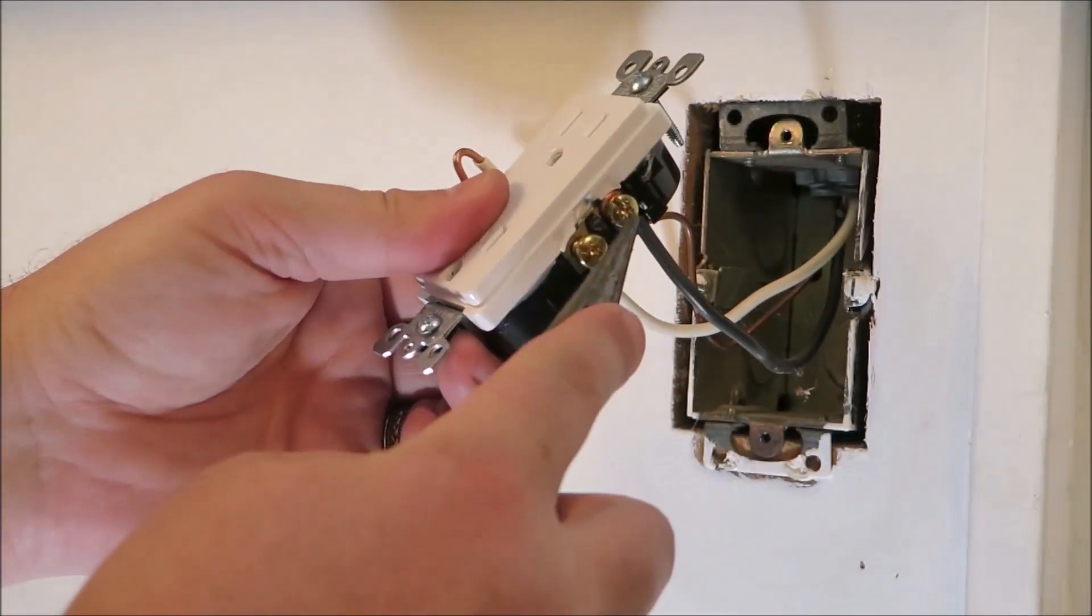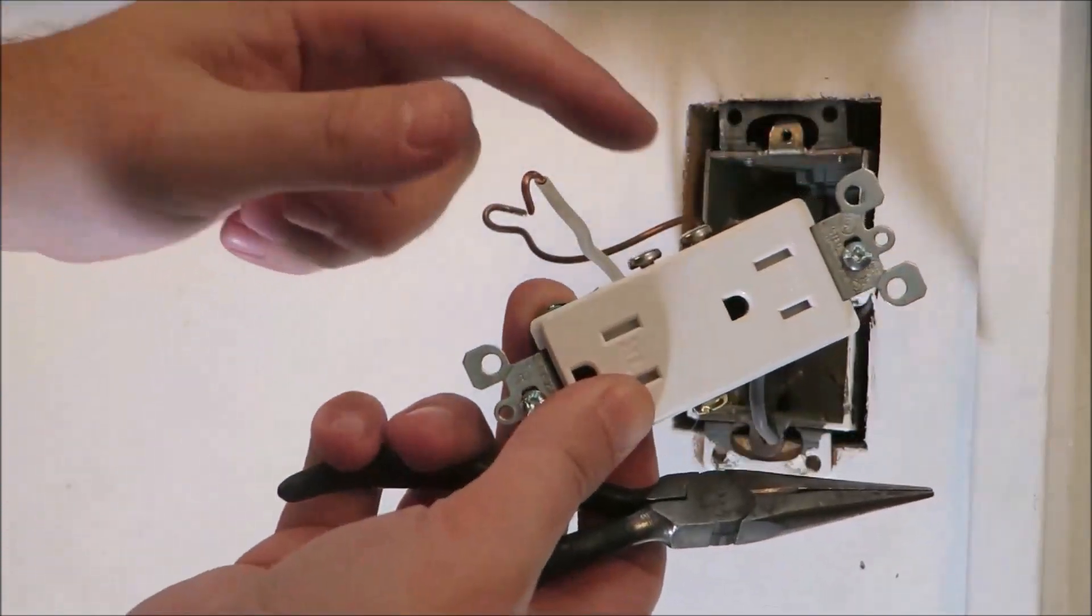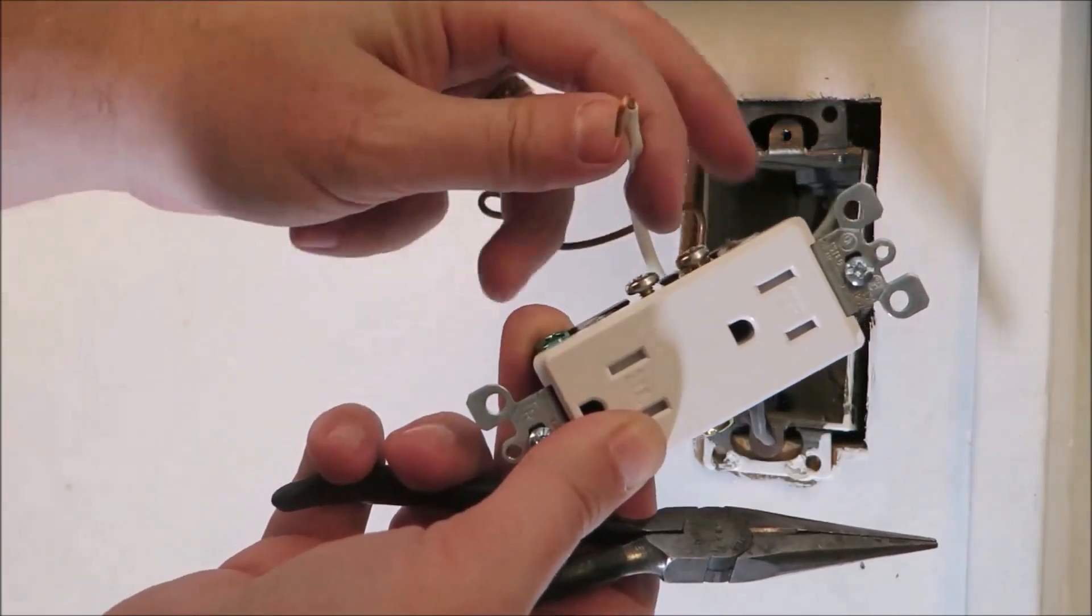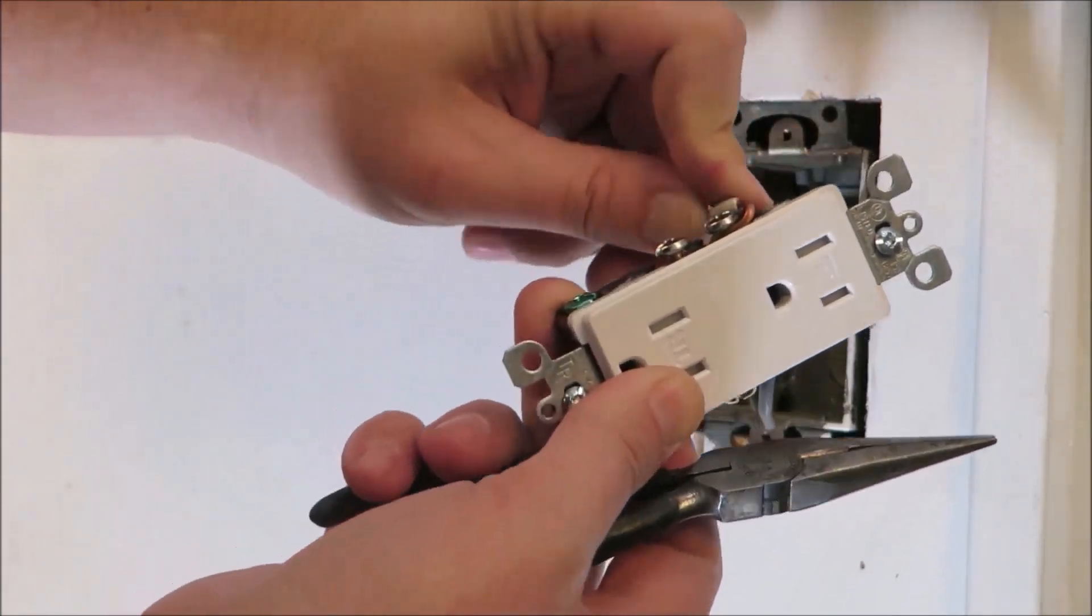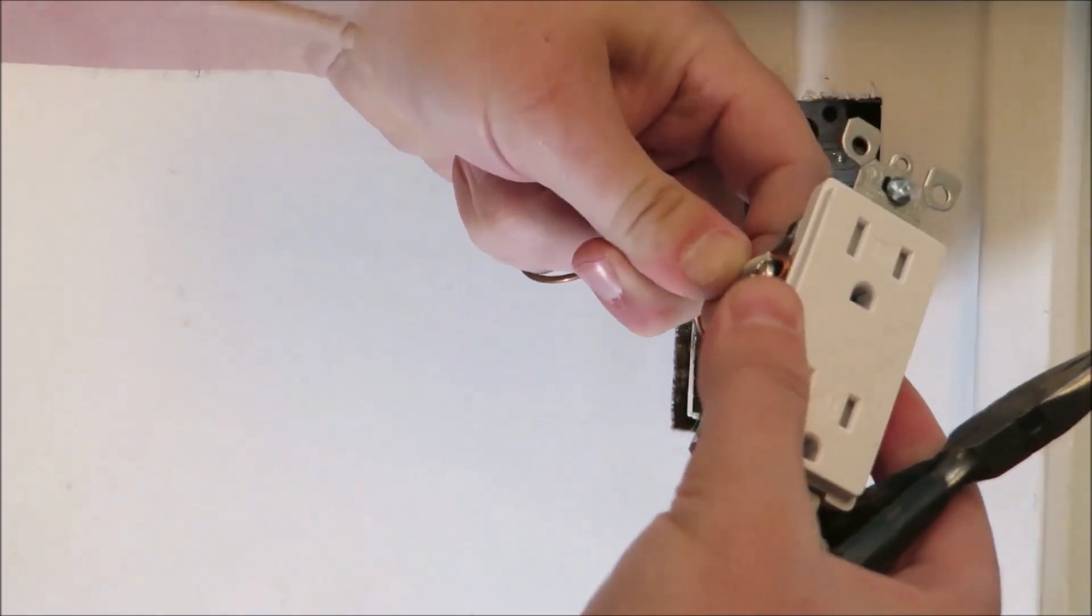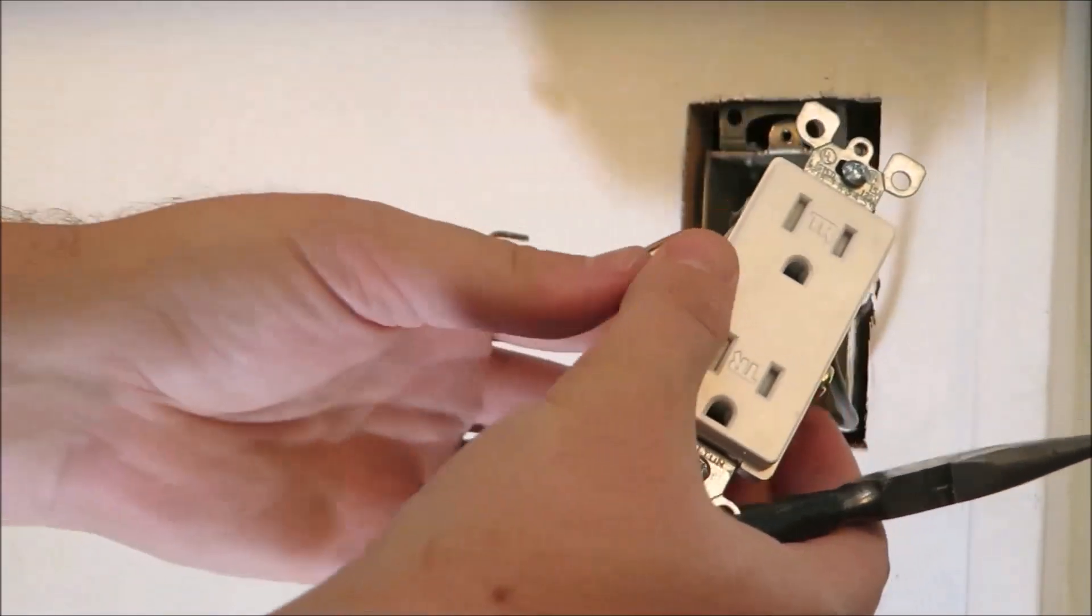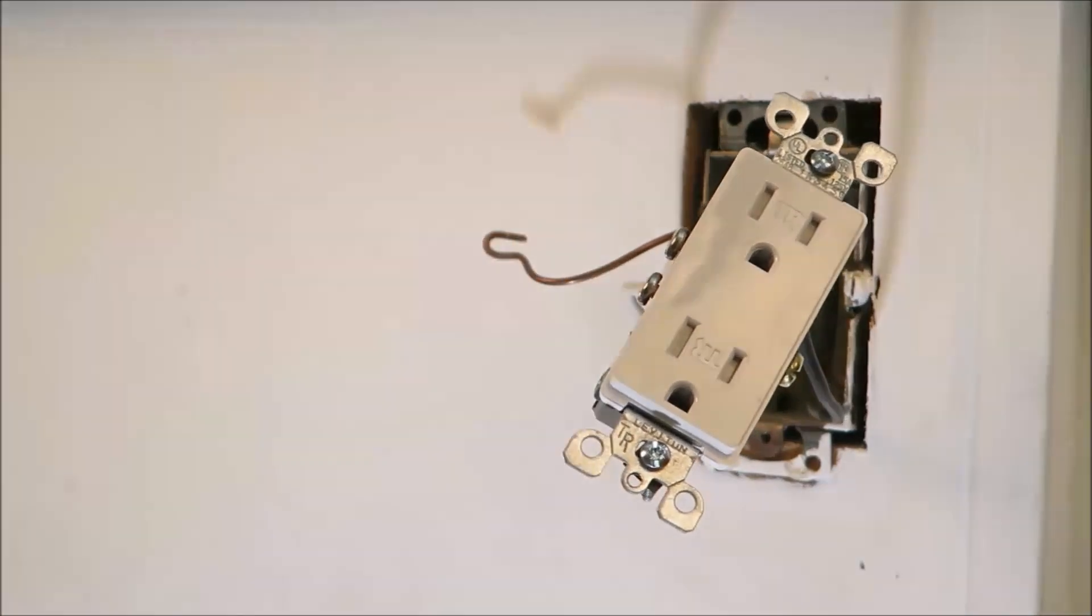All right, so now that we have the hot wire attached, we're going to go to the other side and get our neutral wire and attach it to the neutral side. Now that we have that there, we've got to tighten it up.